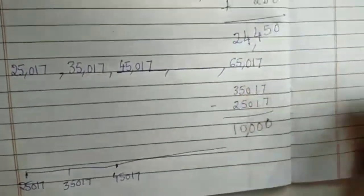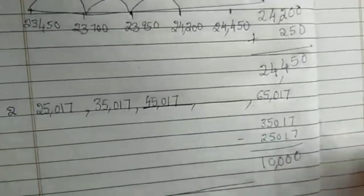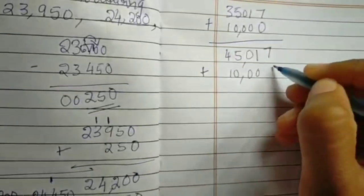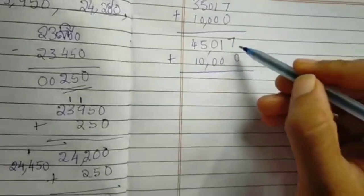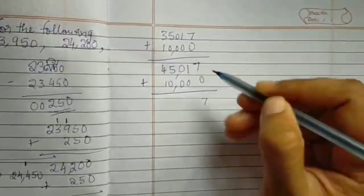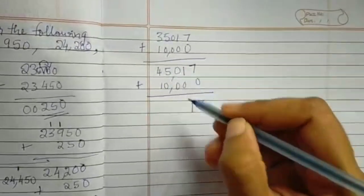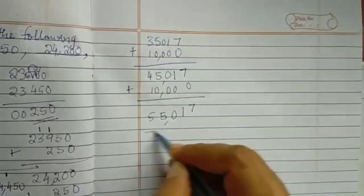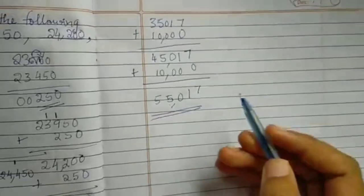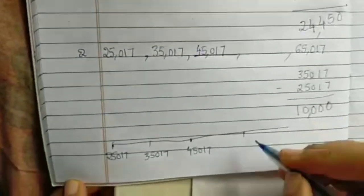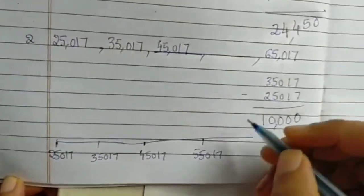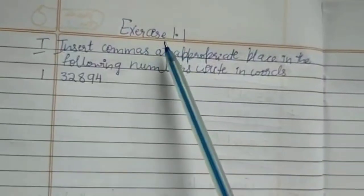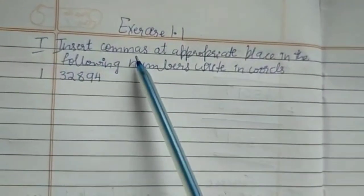For the fourth position, similarly 45,017 plus 10,000: 7 plus 0 is 7, 1 plus 0 is 1, 0 plus 0 is 0, 5 plus 0 is 5, and 4 plus 1 is 5. The answer is 55,017. I'm writing 55,017 here as well.